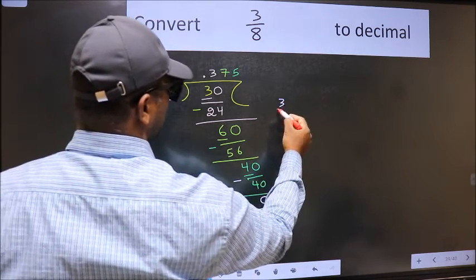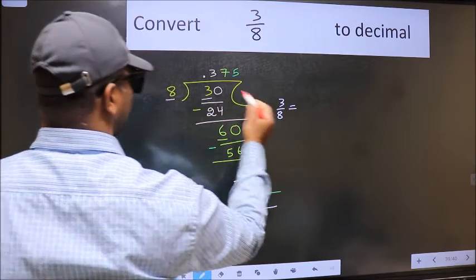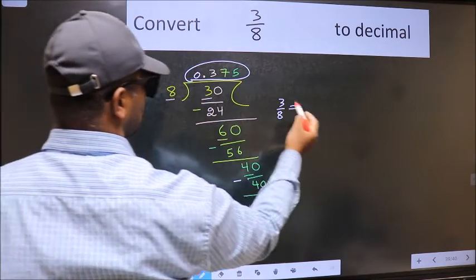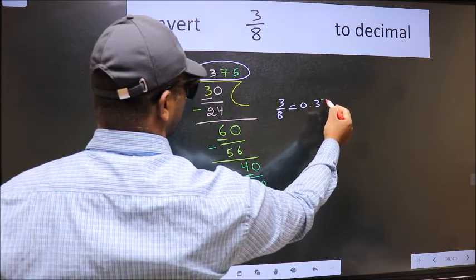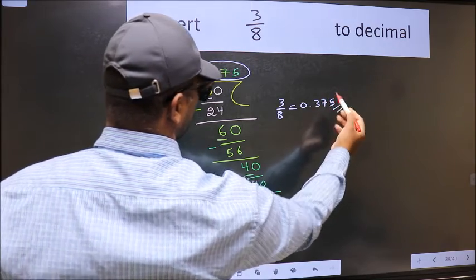So, 3 by 8 is nothing but the decimal is this one. 0.375 is our answer.